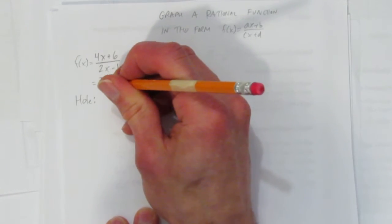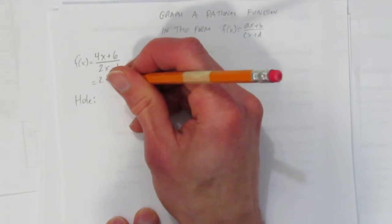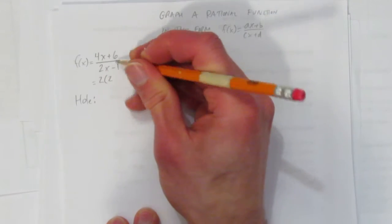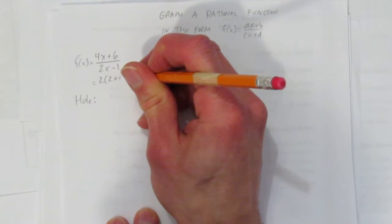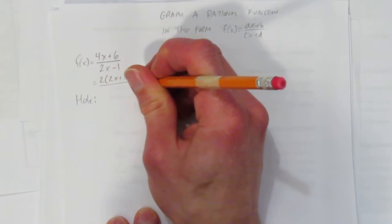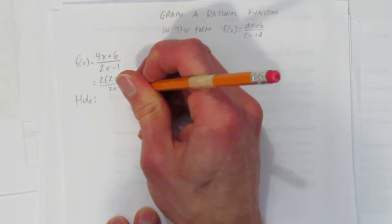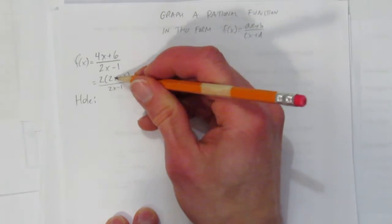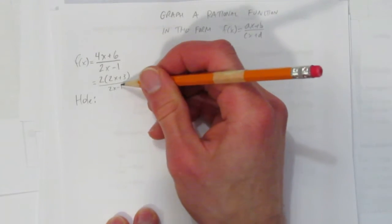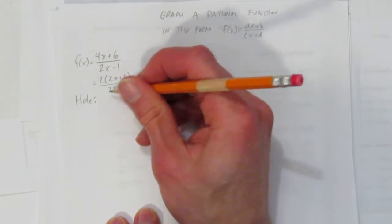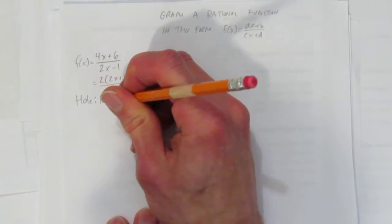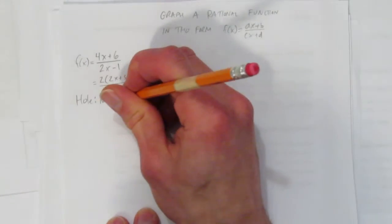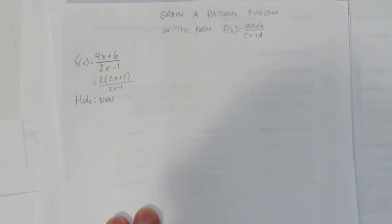If I factored a 2 out of here, I would get 2(2x+3). And then on the bottom, I still have 2x-1. If there was a hole, then this would both be 2x+3 or both be 2x-1. It isn't. They're not common factors. There's no hole.